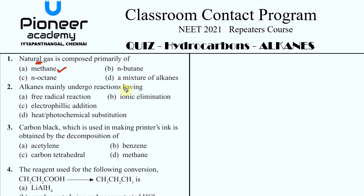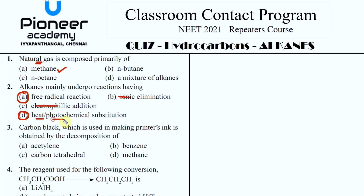Alkanes mainly undergo reactions - in alkanes you will get a carbon-carbon and carbon-hydrogen bond. That is a non-polar bond. When it is non-polar, it cannot be ionic or electrophilic/nucleophilic. So they always undergo heat or photochemical substitution reactions - free radical reactions.